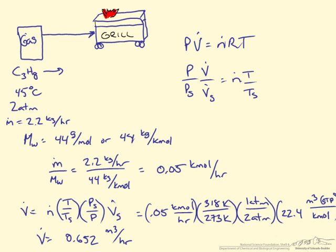If those units are good enough we can stop there or we could convert this to liters which would give us 652 liters per hour. So hopefully you can see that we never needed the gas constant R because we used the standard conditions.